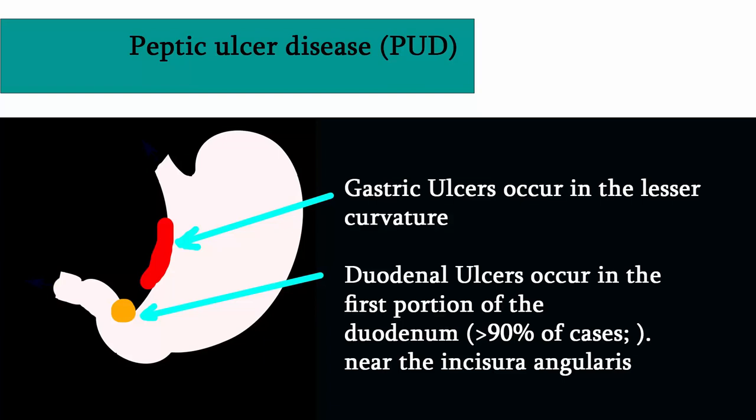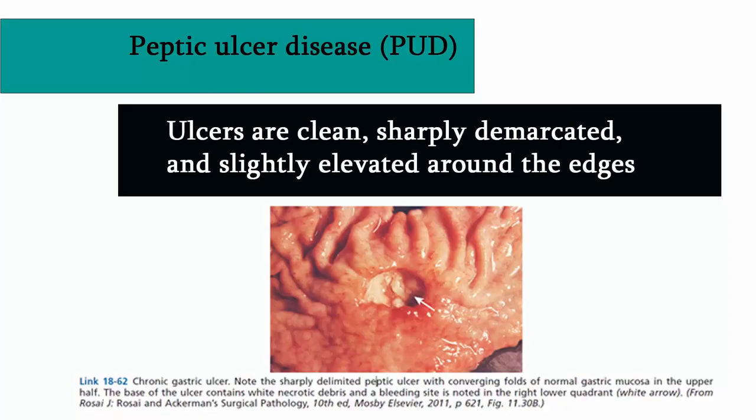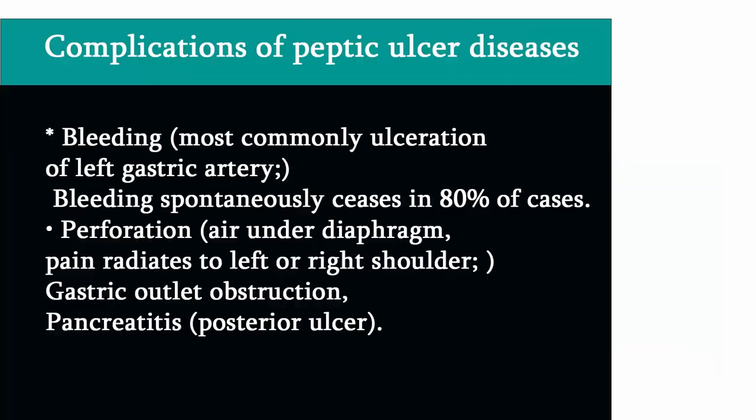Gross appearance of ulcers: ulcers are clean, sharply demarcated, and slightly elevated around the edges. Most gastric ulcers are benign. A small percentage may be malignant, which is the reason why they are biopsied.